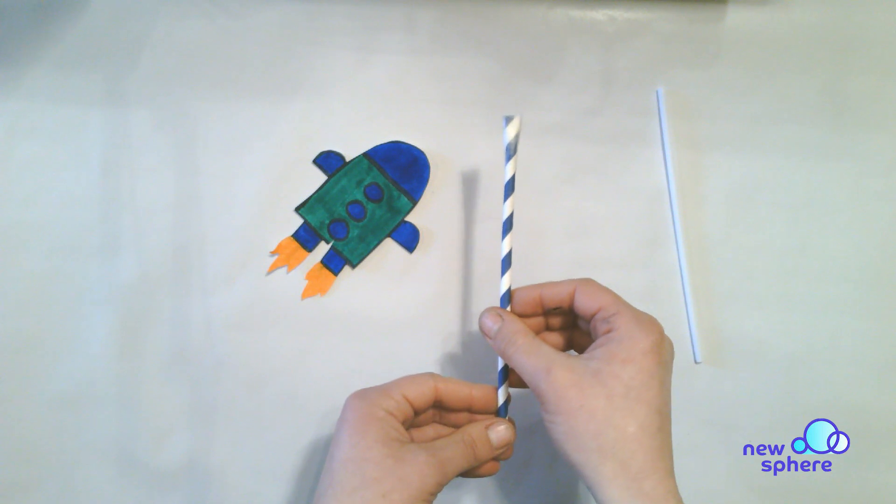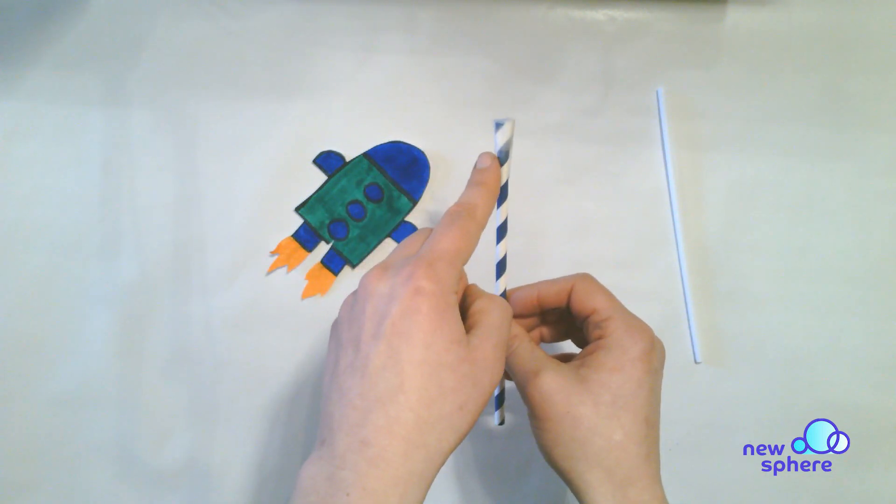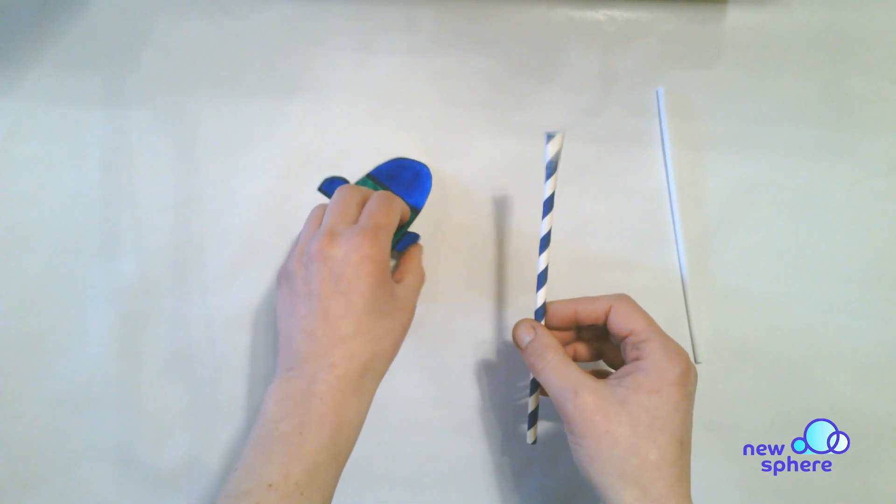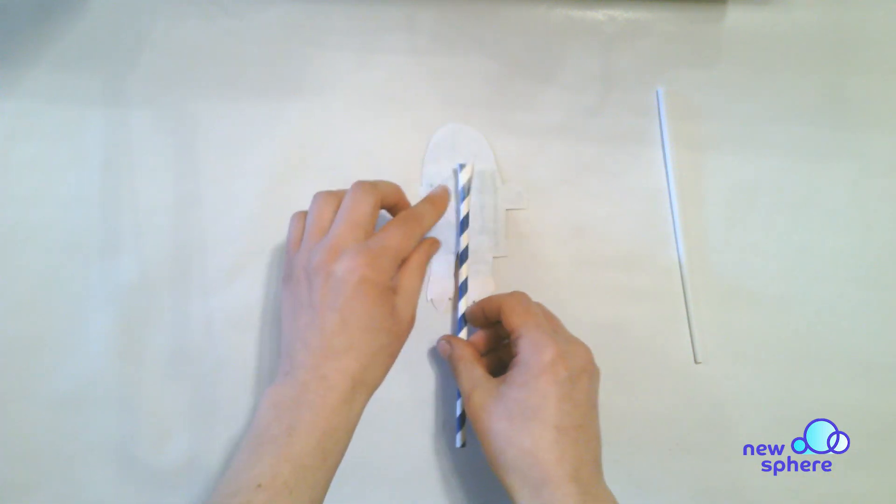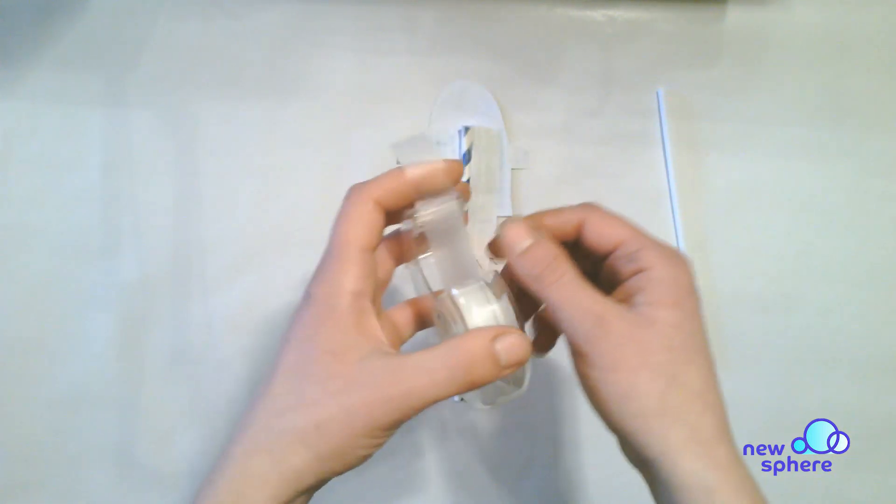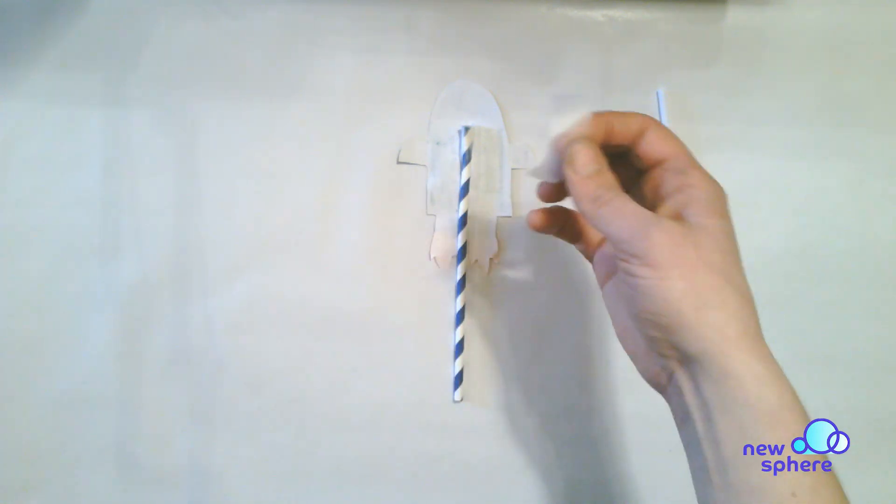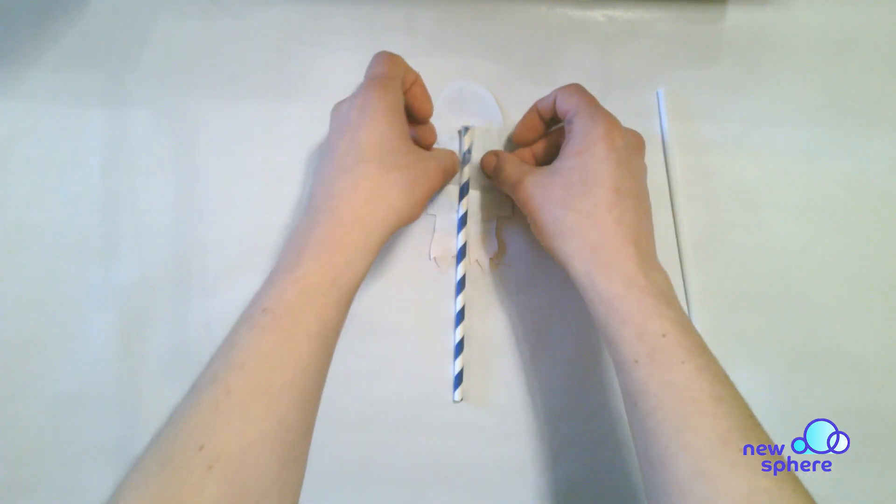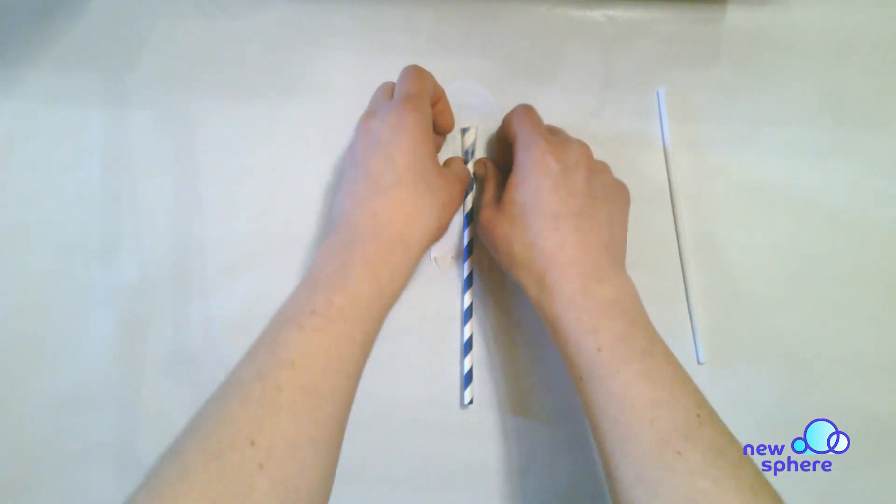When you have taped the top of your straw, take your rocket, turn it over, then place your straw where you would like it. Then get a small piece of tape to put on the back and tape your rocket to the straw.